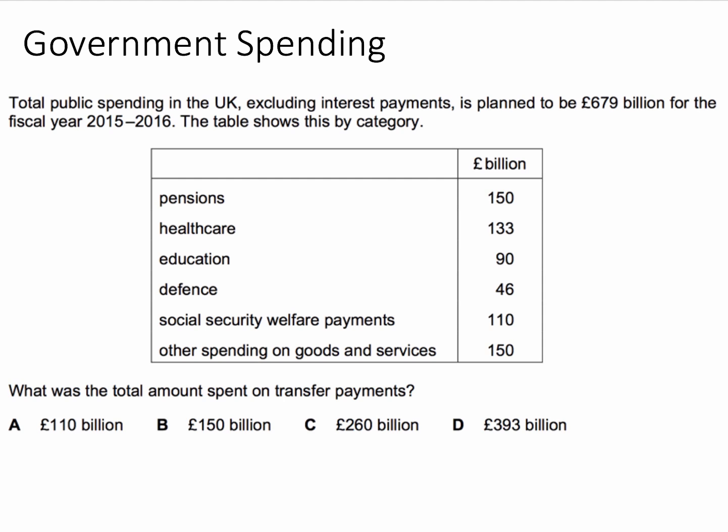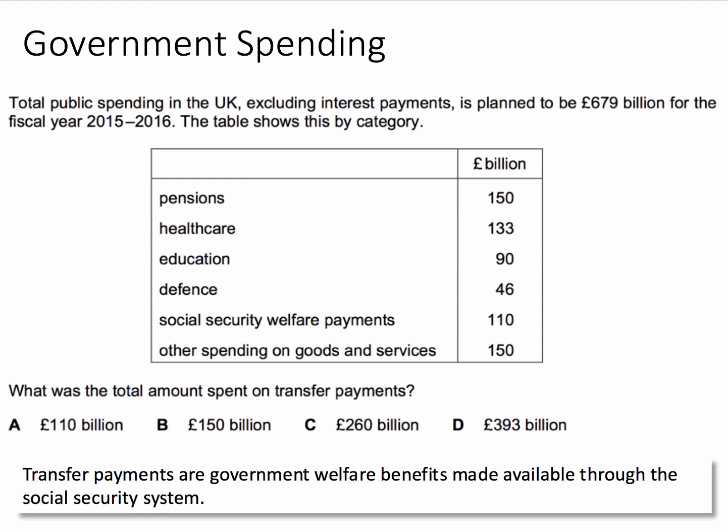So we need a definition of transfer payments to get the right answer. Knowledge is needed in many multiple choice questions. Transfer payments are government welfare benefits made available through the social security system. They're not included in general government spending because they're just a transfer from taxpayer to benefit recipient.